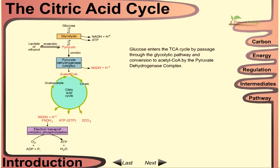Glucose enters the TCA cycle by passage through the glycolytic pathway and conversion to acetyl-CoA by the pyruvate dehydrogenase complex.